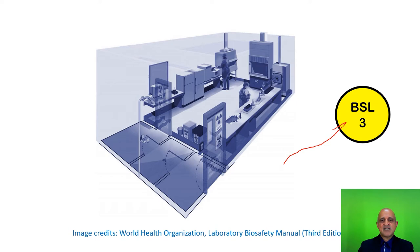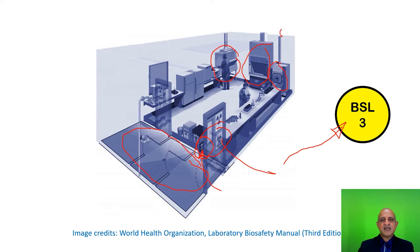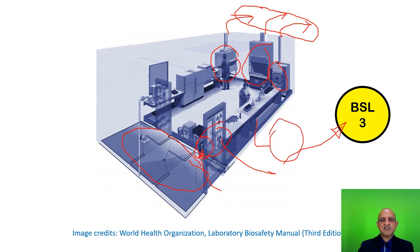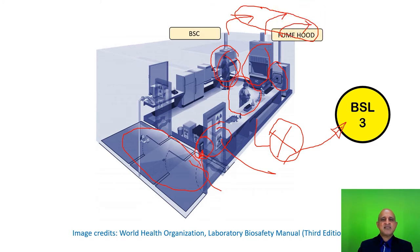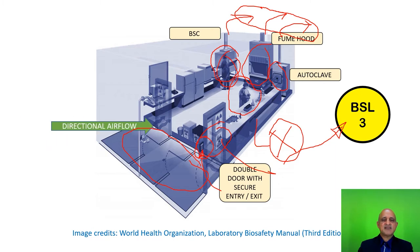Biosafety level 3 laboratories are far more complex as they have directional airflow. Entry into the laboratory is via an airlock with suitable biosecurity and biosafety precautions such as signage and keypad entry. The biological safety cabinet and fume hood are located within, and the autoclave is generally located within the laboratory itself. Everything is hard-ducted out into the environment via HEPA filters. Drainage is released through an effluent disposal system. The technicians and laboratory workers are working with the appropriate PPEs. Key features include the BSC, fume hood, autoclave, double door with secure entry-exit, and directional airflow.